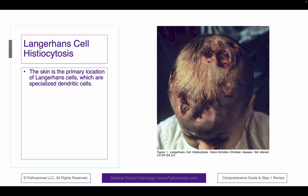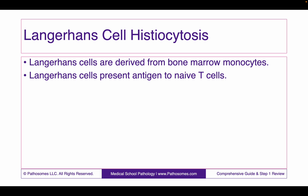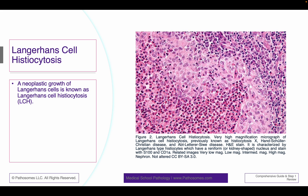Langerhans cell histiocytosis. The skin is the primary location of Langerhans cells, which are specialized dendritic cells. Our patient has Langerhans cell histiocytosis involving the scalp. Langerhans cells are derived from bone marrow monocytes. Langerhans cells present antigen to naive T-cells. A neoplastic growth of Langerhans cells is known as Langerhans cell histiocytosis, as we can see here in the right image. Notice that Langerhans cell histiocytosis is associated with an abundance of eosinophilia in this particular image.